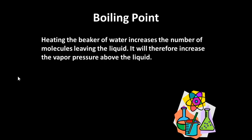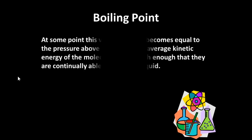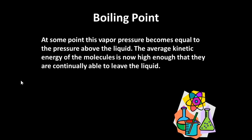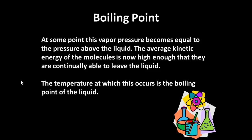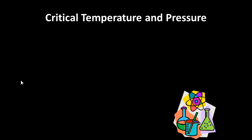What happens when something boils? Heating the beaker of water increases the number of molecules leaving the liquid and increases the vapor pressure above the liquid. At some point, the vapor pressure becomes equal to the pressure above the liquid. The average kinetic energy of the molecules is high enough so that they can continually leave the liquid. That temperature is known as the boiling point of the liquid.